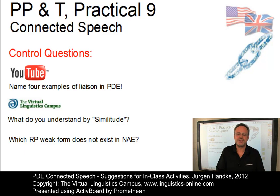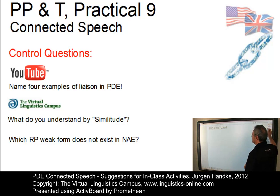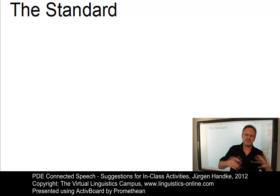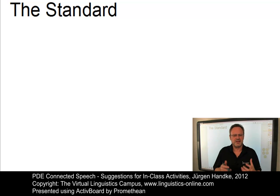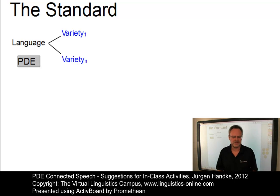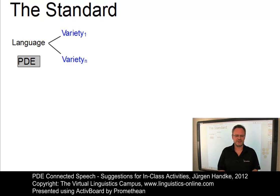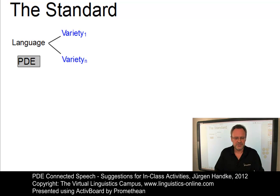Last but not least, I suggest that we repeat the central terms: RP, North American English, British English, etc. First of all, I would start with languages and inform students that languages consist of varieties — theoretically an unlimited number of varieties. The language we are talking about is of course PDE, present-day English.